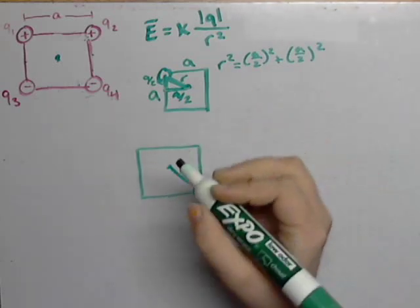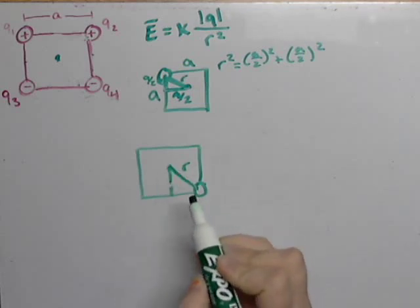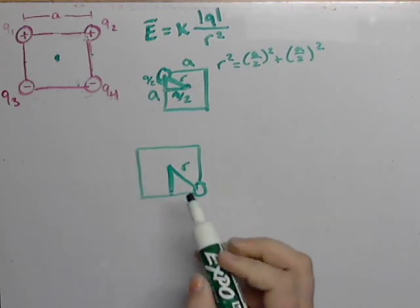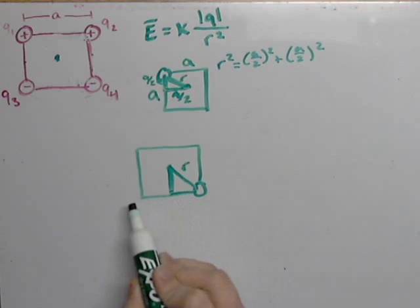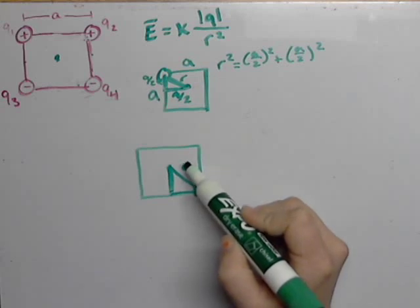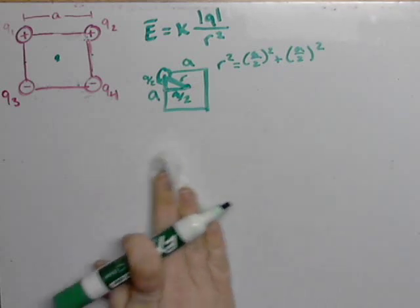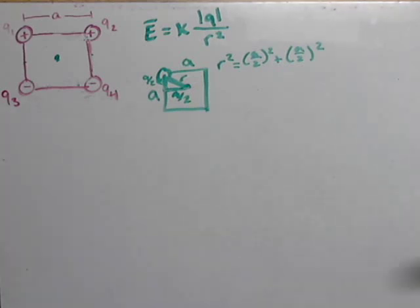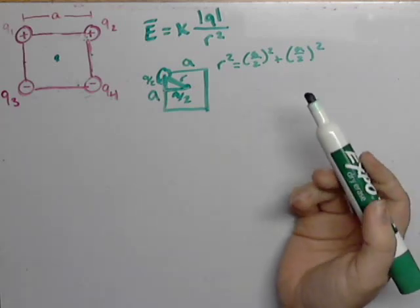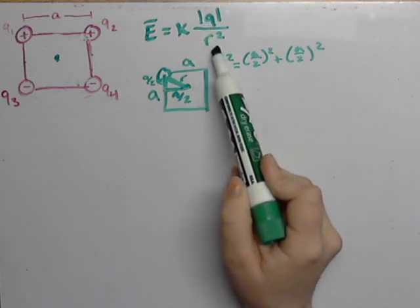If we were to look at another one, let's say Q4, and we're looking for R, we would still be looking for a triangle. Since the point is in the center, this length is half of this length, and this length is half of this length. So again, we would get the same equation for a different point. That means we can assume that for each point at the corners of the square, the R value is going to be the same.